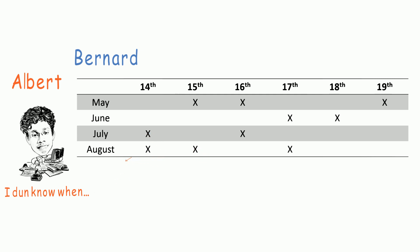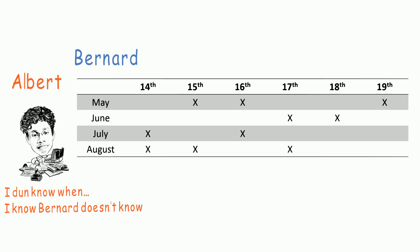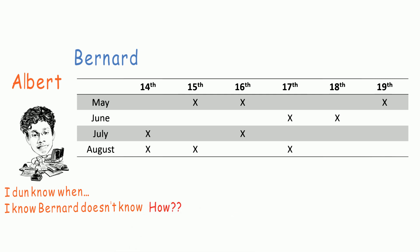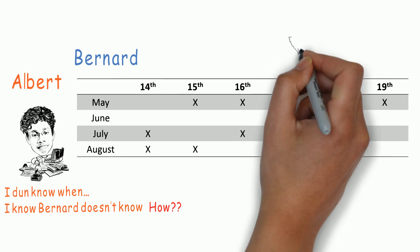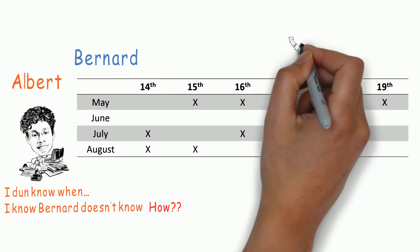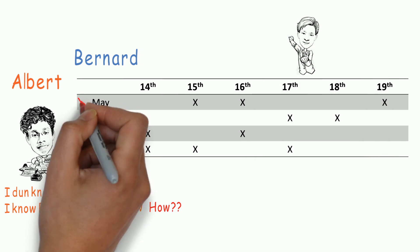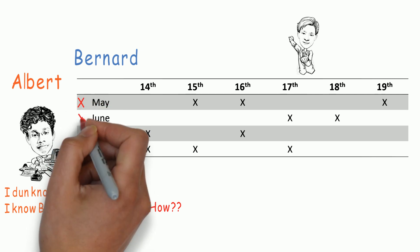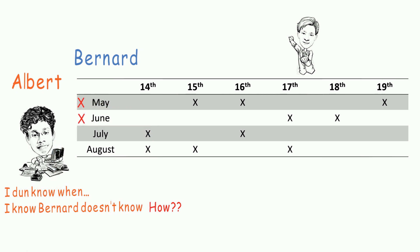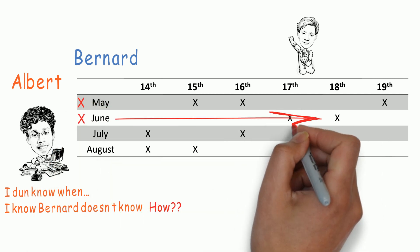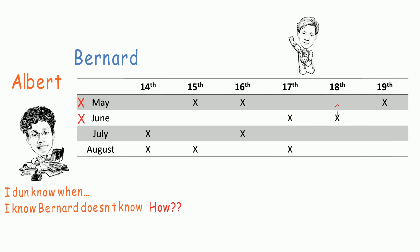Albert says: I do not know when Cheryl's birthday is — which is obvious because drawing any horizontal line highlights more than one cross. Albert simply does not know based on just knowing the month. But Albert also says: I know that Bernard does not know too. How does Albert know for sure that Bernard doesn't know? The answer is: Albert must know the month is not May or June. If it was June, for example, then Bernard might know Cheryl's birthday if told the 18th.